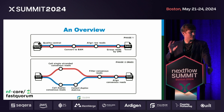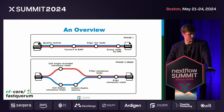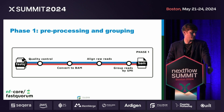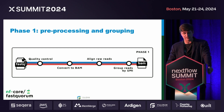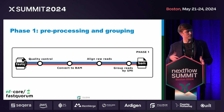The pipeline is organized into two phases. The first phase is a preprocessing phase to get to grouped reads. In this phase we do standard quality control: we take the FASTQs, convert them to BAM and extract the UMIs, adding them as SAM tags to the BAM file so they're always carried along. We then align the reads to the genome, and use the UMIs and the alignments to group reads that come from the same source molecule — the same UMI aligning to the same place.